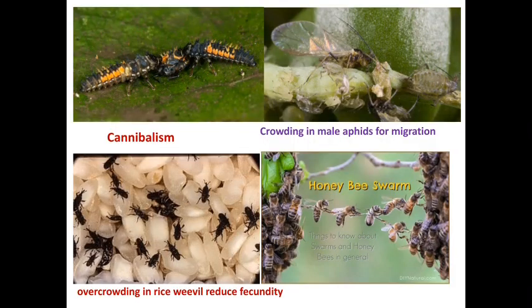In this picture, you can see both larvae are ladybird larvae that compete with each other for food, feeding on the same individuals. In the second picture, crowding causes male aphids to develop wings — the alate form — and migrate. In the third picture showing rice brown planthopper, the fecundity rate is reduced due to food shortage. In the last picture, swarming shows the migration of a honeybee colony from one place to another due to unfavorable climatic conditions.